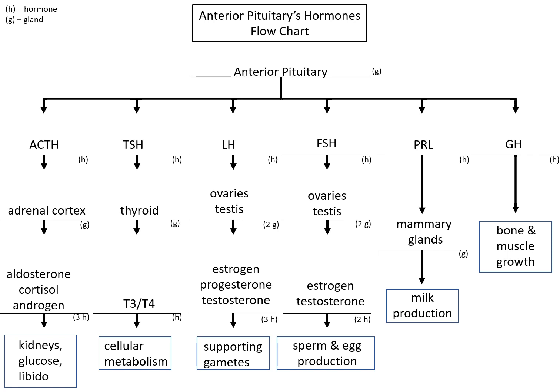So this is how you can begin to think about the anterior pituitary and the six hormones it releases, where those hormones are going, and if going to a gland, what those glands are triggered to do next — in most cases, making another hormone to get the desired effect, and in one case producing a product directly, and in another case having a direct effect on some tissues.